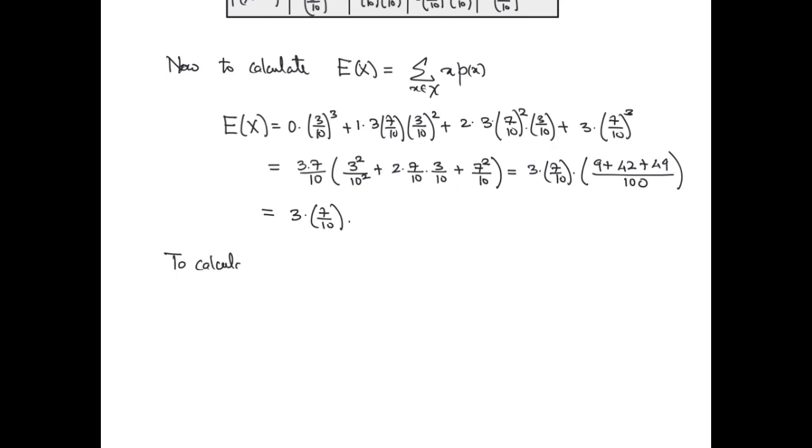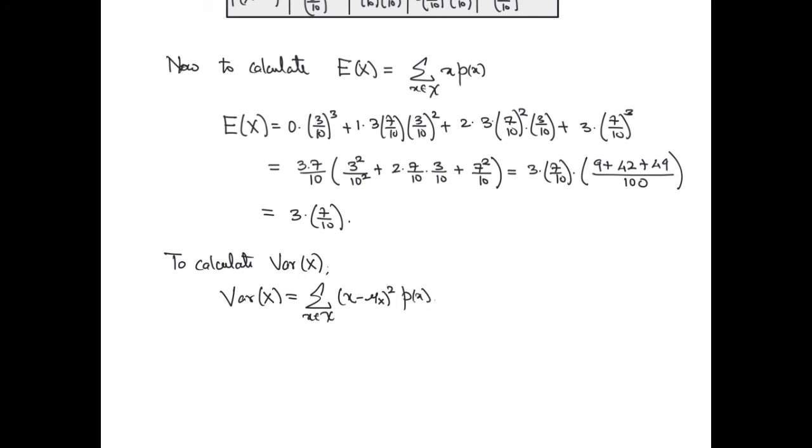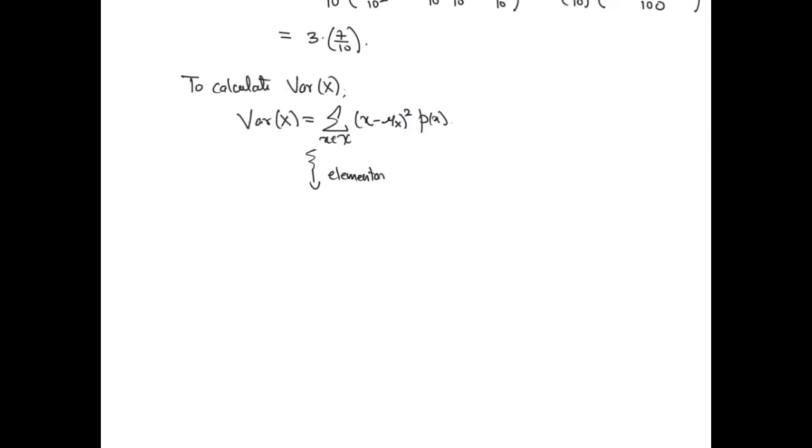To calculate the variance, we use the respective formula. And after a bunch of elementary but not necessarily easy manipulations, we arrive at the following answer, which is 3 times 7 over 10 times 3 over 10.